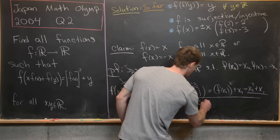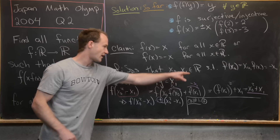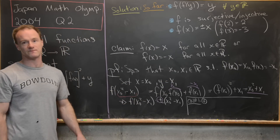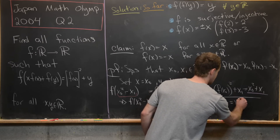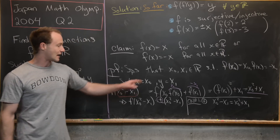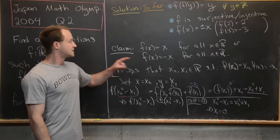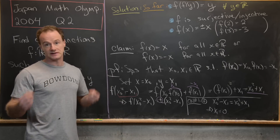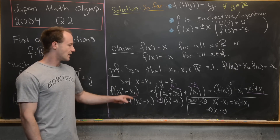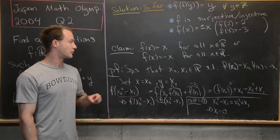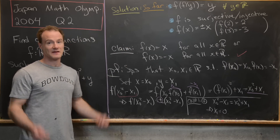In Case 1 (taking the plus sign): x₀² − x₁ = x₀² + x₁, which immediately implies x₁ = 0. So x₁ was already zero, and f(0) = 0 = −0, which is consistent. Case 2 is super similar and gives the same result. This proves our claim: f cannot be +x for some values and −x for others, so f(x) = x for all x, or f(x) = −x for all x. That finishes the problem.